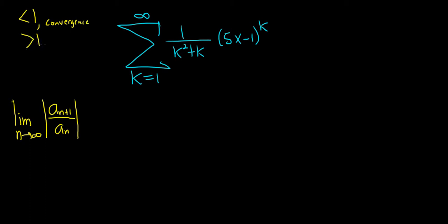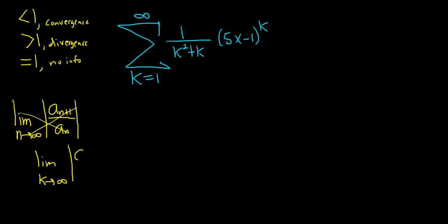If the limit is greater than 1, we'll have divergence. And if the limit is equal to 1, we have no information. So in this case it's not n, it's k, so I'm going to go ahead and just cross this out and replace the n with the k. Most of the time in these problems it's n, but this one happens to have a k, so I'll just rewrite this and use k.